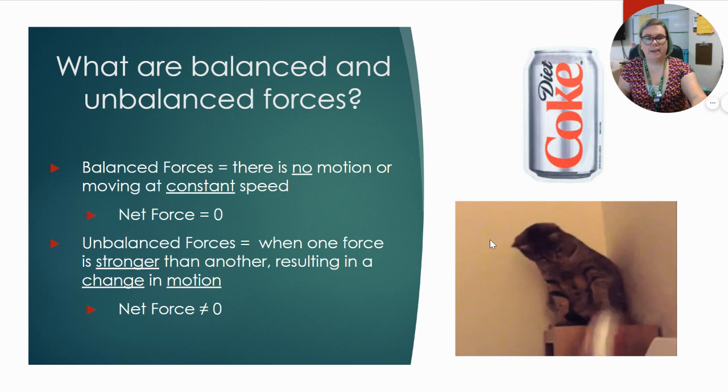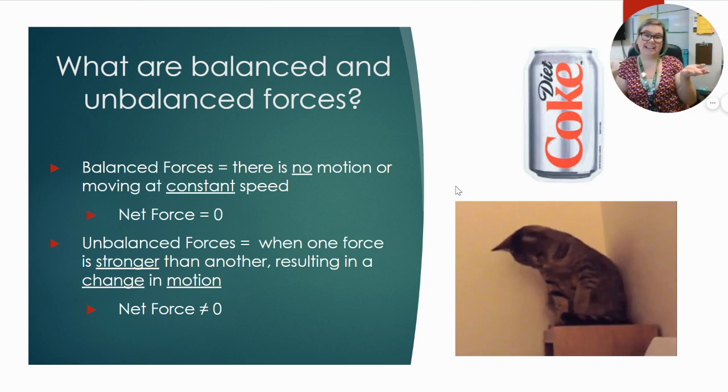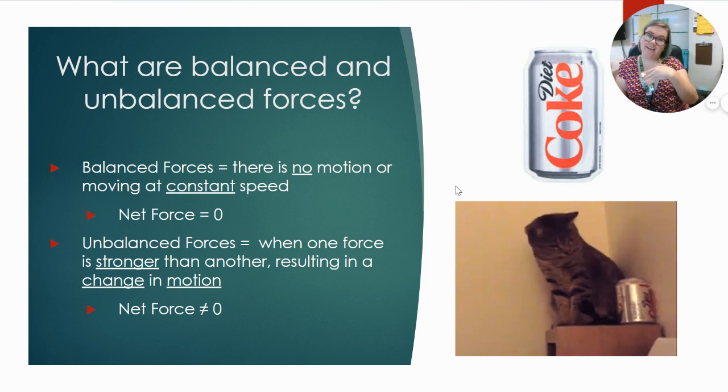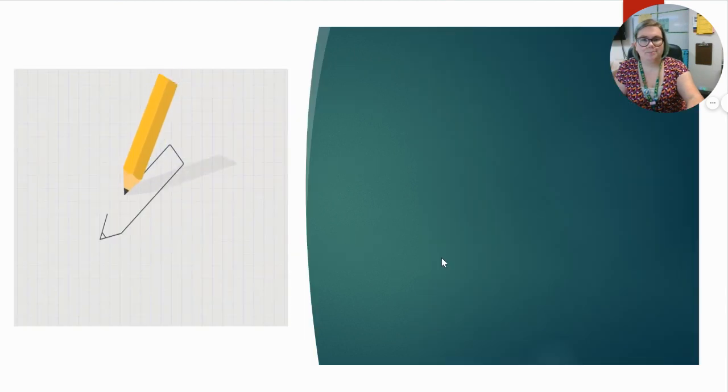So we have an example with our cat and the can of Coke. It was a balanced force when it was just sitting there, and then as soon as the cat hit it, it is no longer balanced. It is unbalanced because it added some force there.